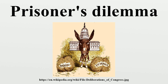B will either cooperate or defect. If B cooperates, A should defect, because going free is better than serving one year. If B defects, A should also defect, because serving two years is better than serving three. So either way, A should defect. Parallel reasoning will show that B should defect.